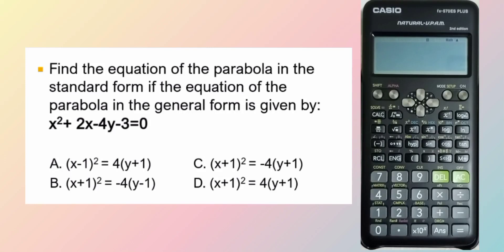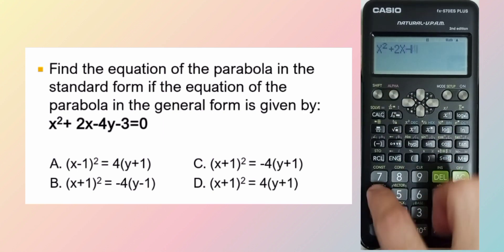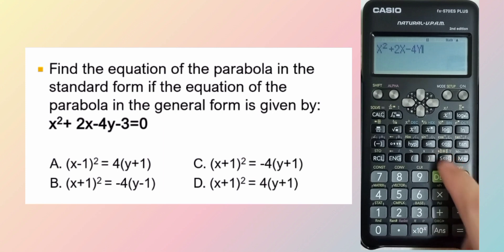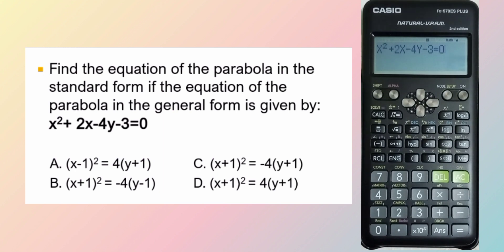Find the equation of the parabola in the standard form if the equation of the parabola in the general form is given by x squared plus 2x minus 4y minus 3 is equal to 0. This is the general form of the parabola and our task is to find the standard form.